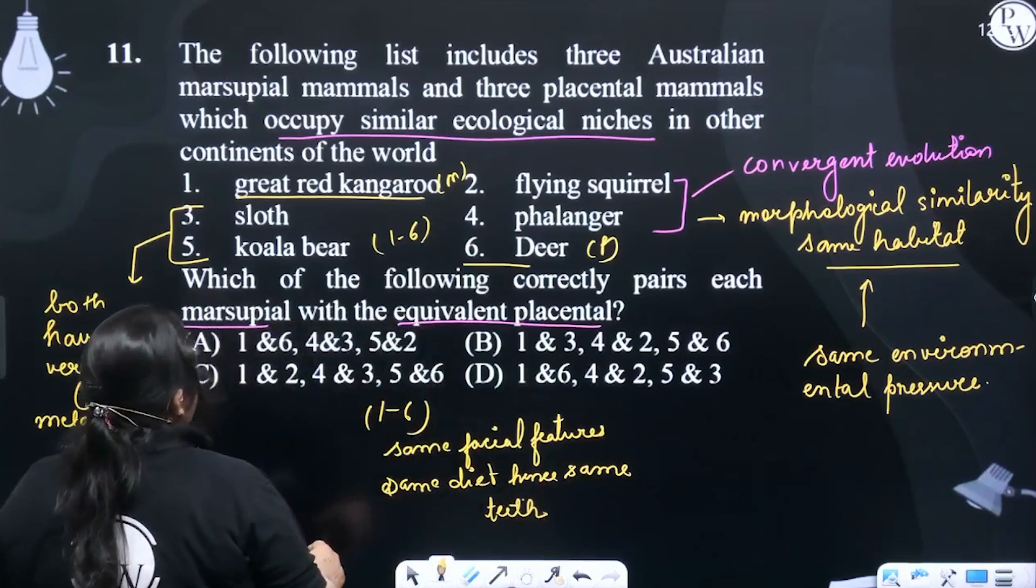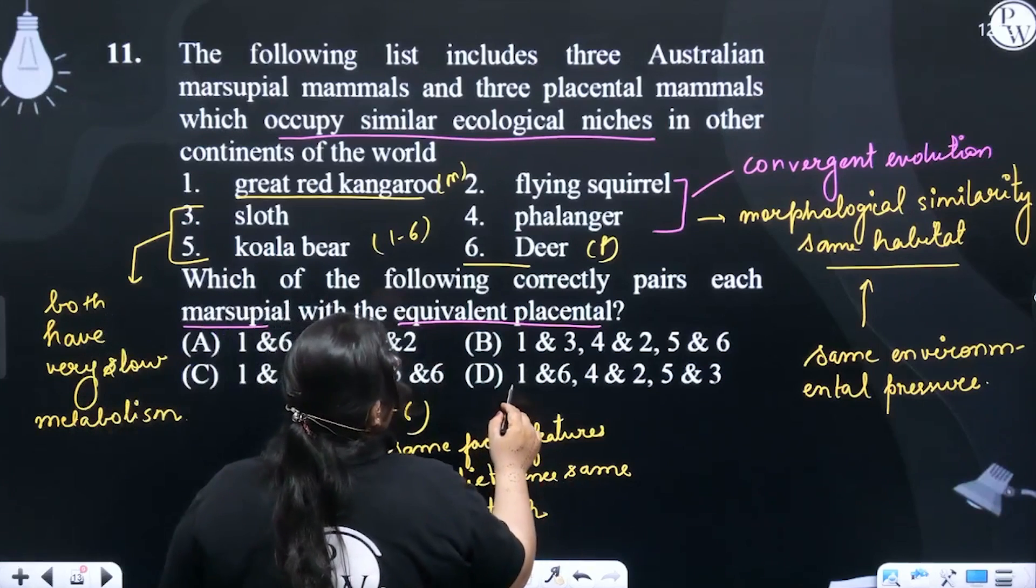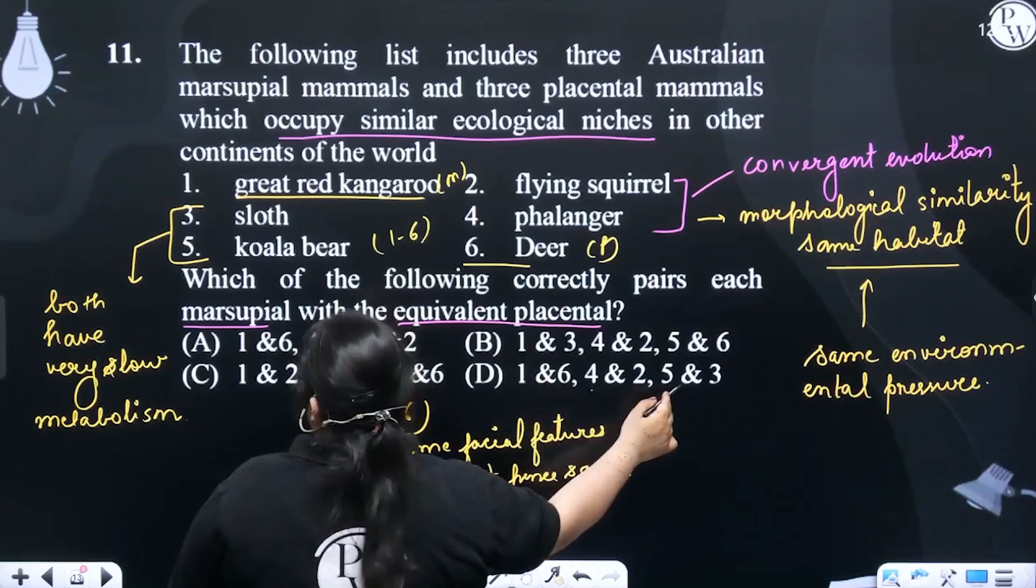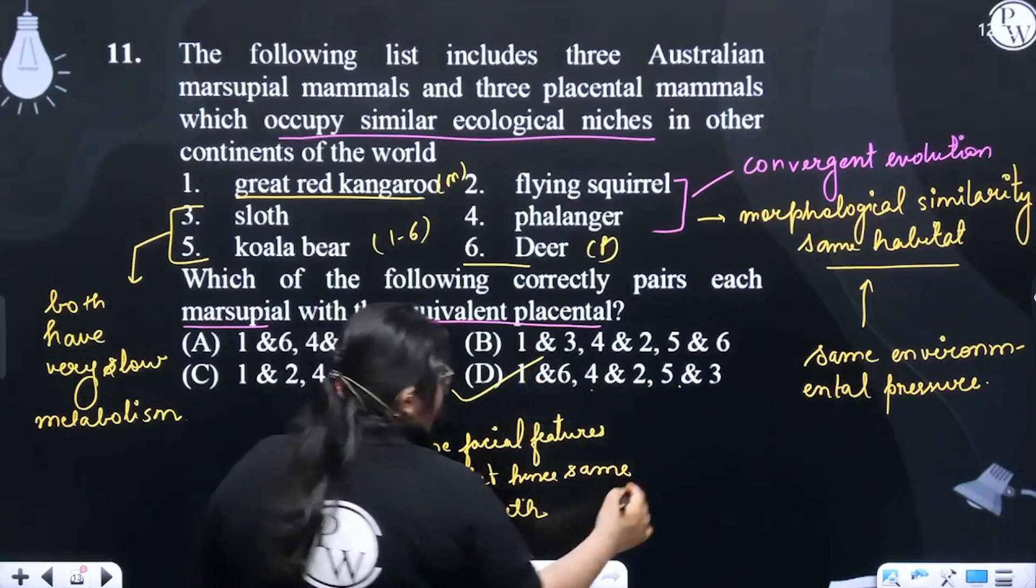So if we go by this: one with six, two with four, and five with three, D is the right answer.